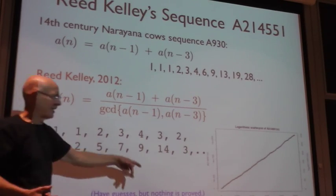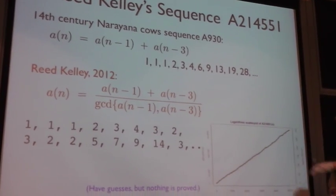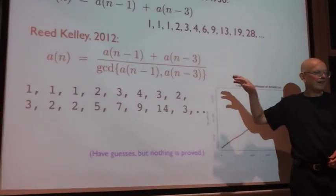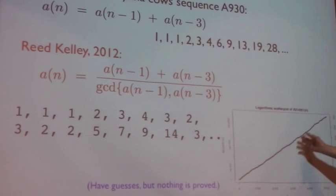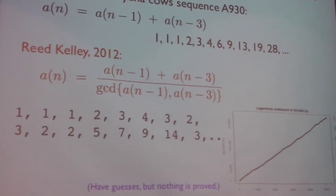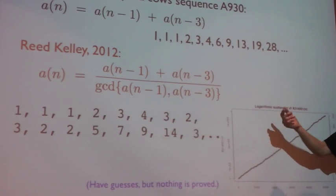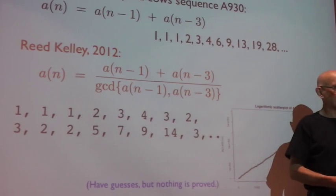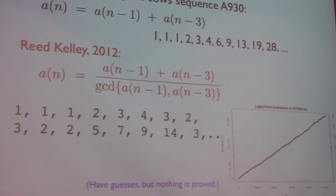And if you plot this, this is a thousand terms and you get a very wobbly line. This is not converging in any obvious manner. It seems that the nth term is roughly e to the about n over nine but nothing is known. We have no non-trivial bounds on this sequence. Nothing is known about its growth. I think it's a very nice question.